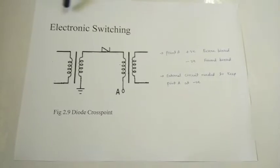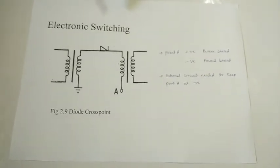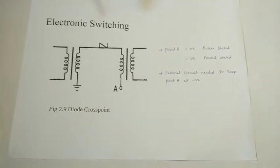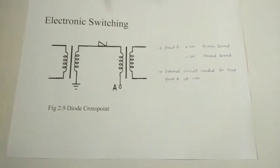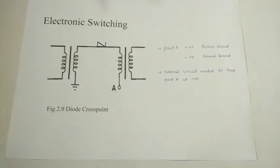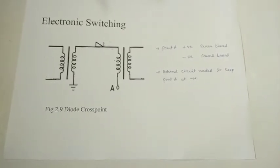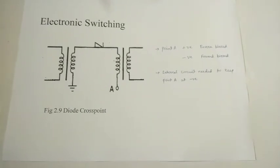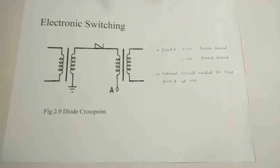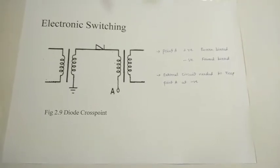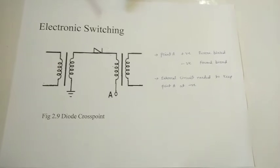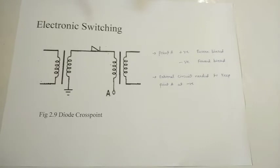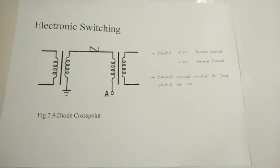Now we are going to study electronic switching. We started with the advancement of stored program control used in message switching. When we want to connect one point to another, we started with a manual operator. Manual operators were replaced with relays which were uneconomic, and those were replaced by the crossbar switch. But we still need a higher-end system which will provide more facilities to customers — facilities not provided by the earlier electromechanical switches. Before understanding electronic switching, we will go through what facilities the customers can control by themselves.